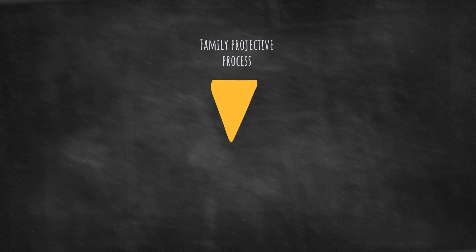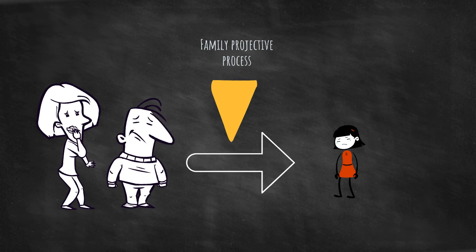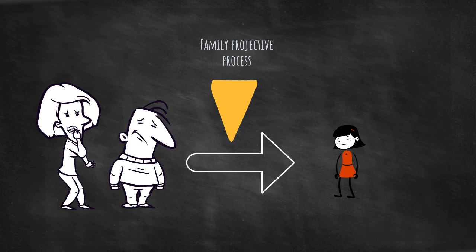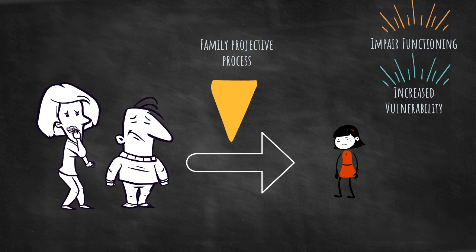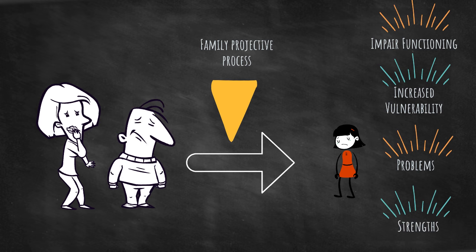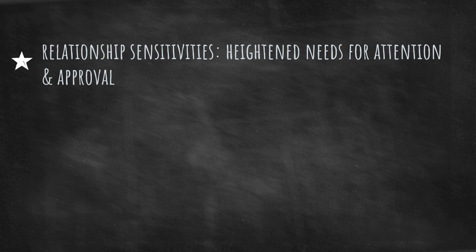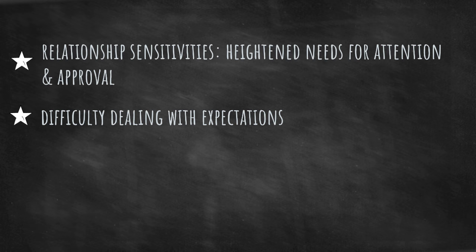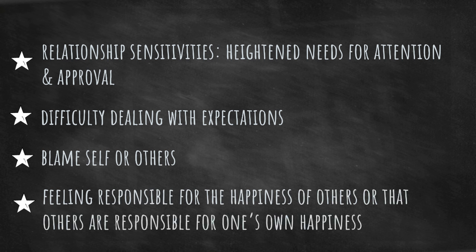The family projection process describes the primary way parents transmit their emotional problems to a child. The projection process can impair the functioning of one or more children and increase their vulnerability to clinical symptoms. Children inherit many types of problems as well as strengths through their relationships with parents. The problems that most affect their lives are relationship sensitivities, such as heightened need for attention and approval, difficulty dealing with expectations, the tendency to blame oneself or others, and feeling responsible for the happiness of others or that others are responsible for their own happiness.